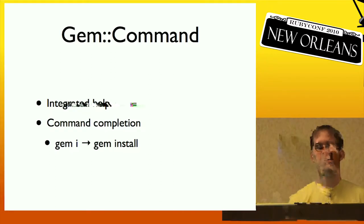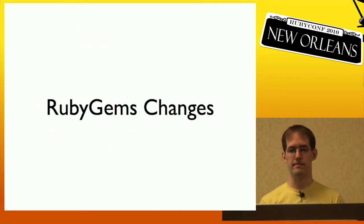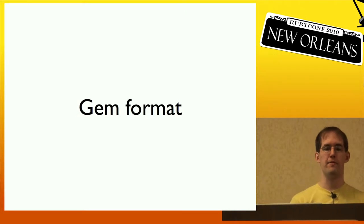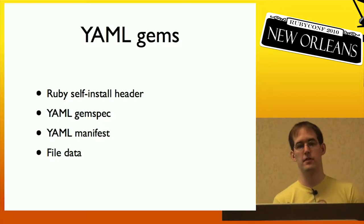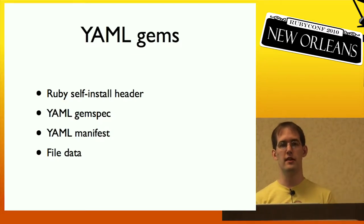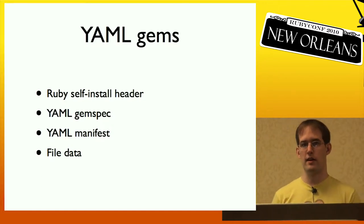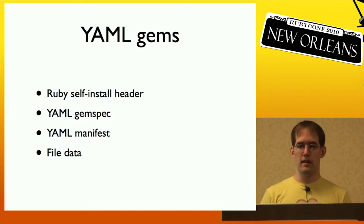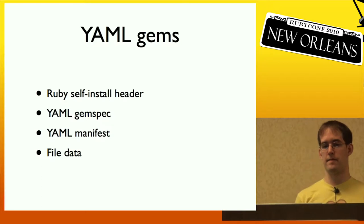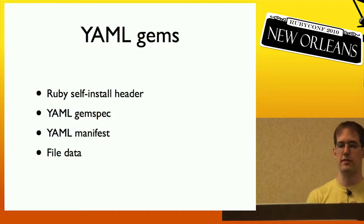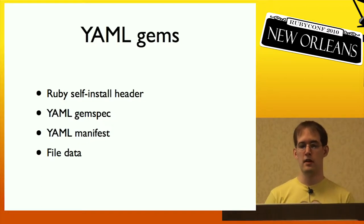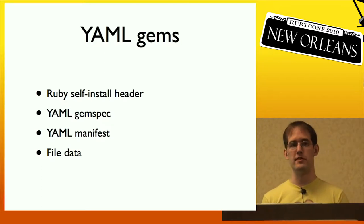Now we'll review some important components in RubyGems that have changed. First up is the gem format. Originally the format was YAML-based. So the beginning was a Ruby self-install header, followed by a YAML gem spec, and then a YAML manifest which listed installed files, their sizes, and their file modes. After that was the file data — one file separated by dashes, base64-encoded and compressed. These original gems you can't install by running gem anymore, because the gem install interface has changed.